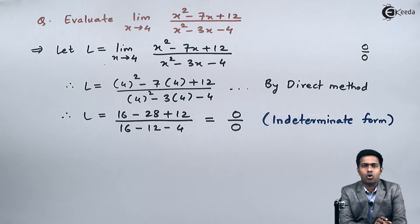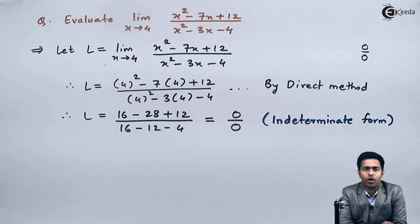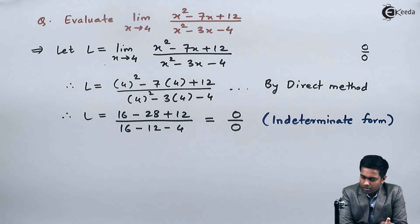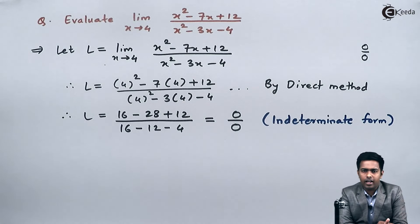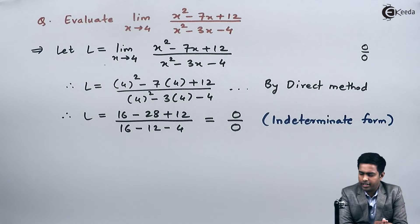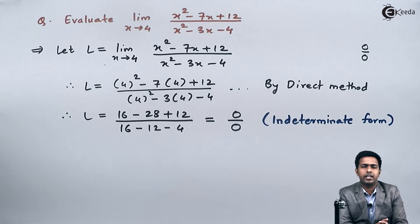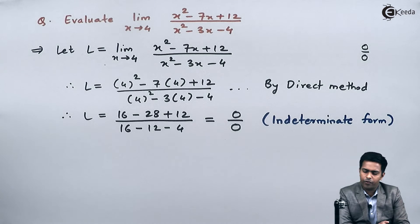To solve such an indeterminate form there is a method called L'Hôpital's rule, but since L'Hôpital's method is not in the MSBTE syllabus, whenever we get an indeterminate form we say direct method has failed and we apply some other method.